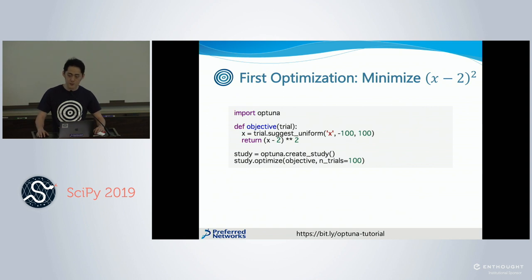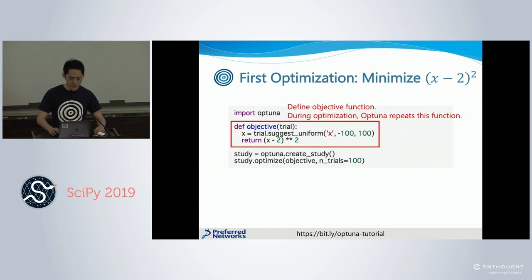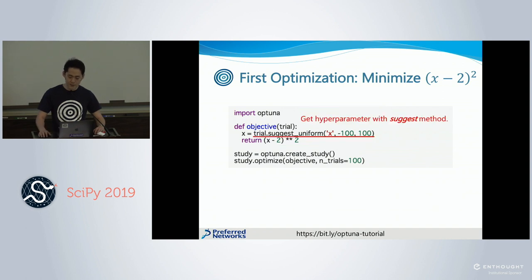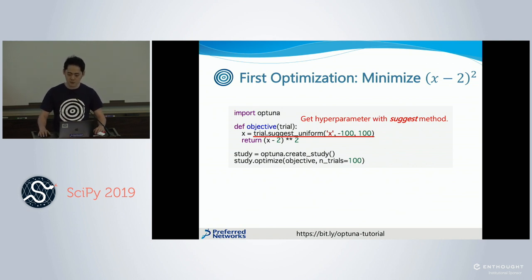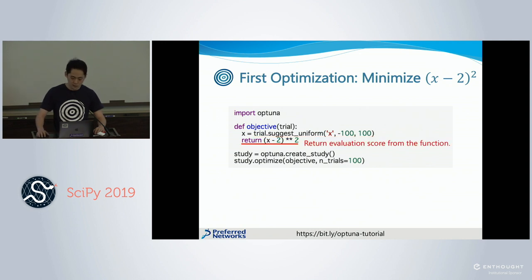This is a script to optimize the quadratic function. First, you need to define the objective function. OpTune executes this function again and again during the optimization, trying different hyperparameters. Here the hyperparameter is x, and you can get the value of the hyperparameter inside the objective function with what is called the suggest method, which literally suggests the hyperparameter to be tried next. We are setting the range of hyperparameter between minus 100 to 100. After getting the value of x, we calculate the objective value and return it.